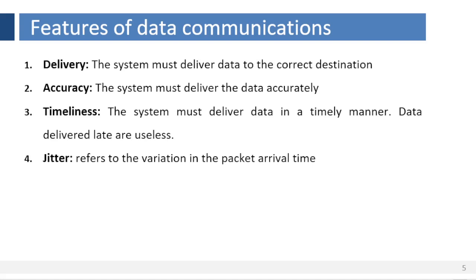Now let us see what are the fundamental features of data communication. The effectiveness of a data communications system depends on the following. First, delivery — the system must deliver data to the correct destination. Data must be received by the intended device or user and only by that device or user. Second, accuracy — the system must deliver the data accurately. Data that have been altered in transmission and left uncorrected are unusable.